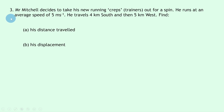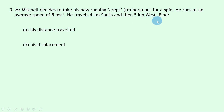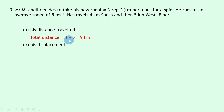Lastly, question 3 says Mr. Mitchell decides to take his new running trainers out for a spin. He runs at an average speed of 5 meters per second, travels 4 kilometers south and then 5 kilometers west. For part a, to find the distance traveled, we just add up the distances: total distance equals 4 plus 5, which equals 9 kilometers.